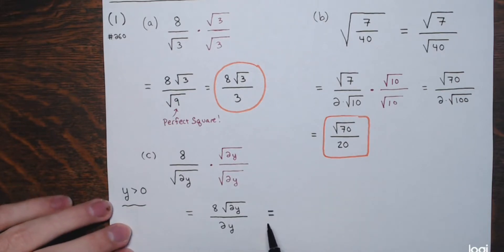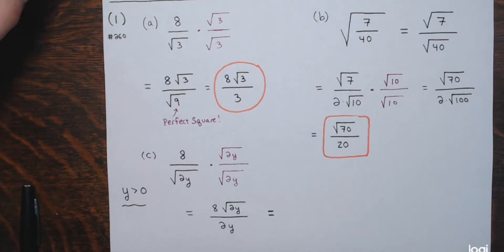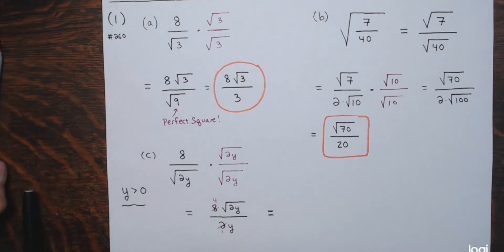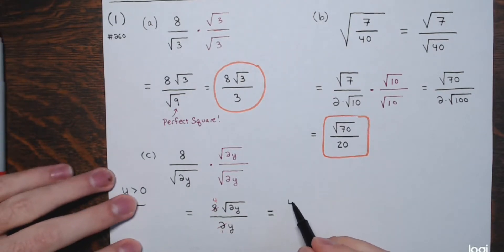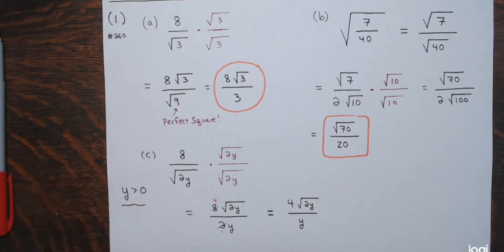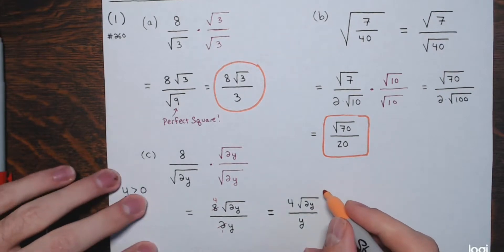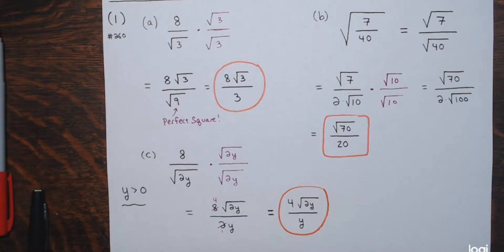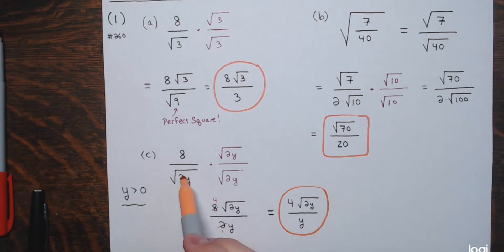We have some common factors: 2 goes into 8 four times. Dividing numerator and denominator by 2, the numerator becomes 4 times the square root of 2y, and the denominator becomes just y. If you want to verify, replace y with any positive number, plug it into the original expression and this final expression, and you'll get the same result.